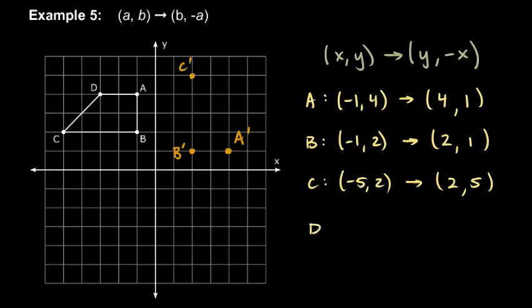And one more. Point D. The original point D is at (-3, 4). And so that's going to transform into (4, 3). So that's 4 to the right and 3 up. So point D primed goes right there. So here's my new shape.